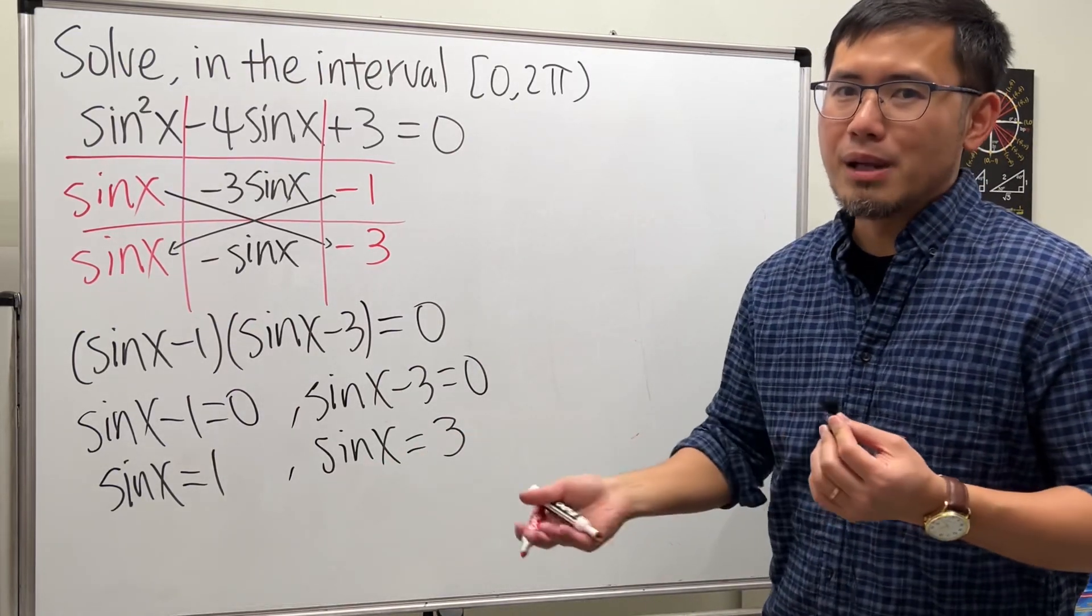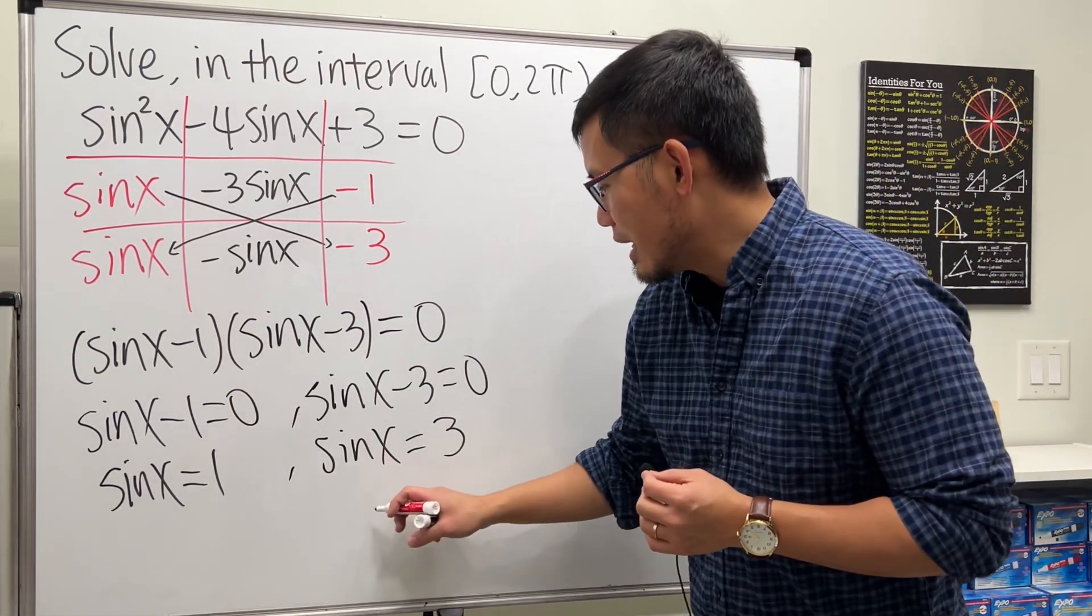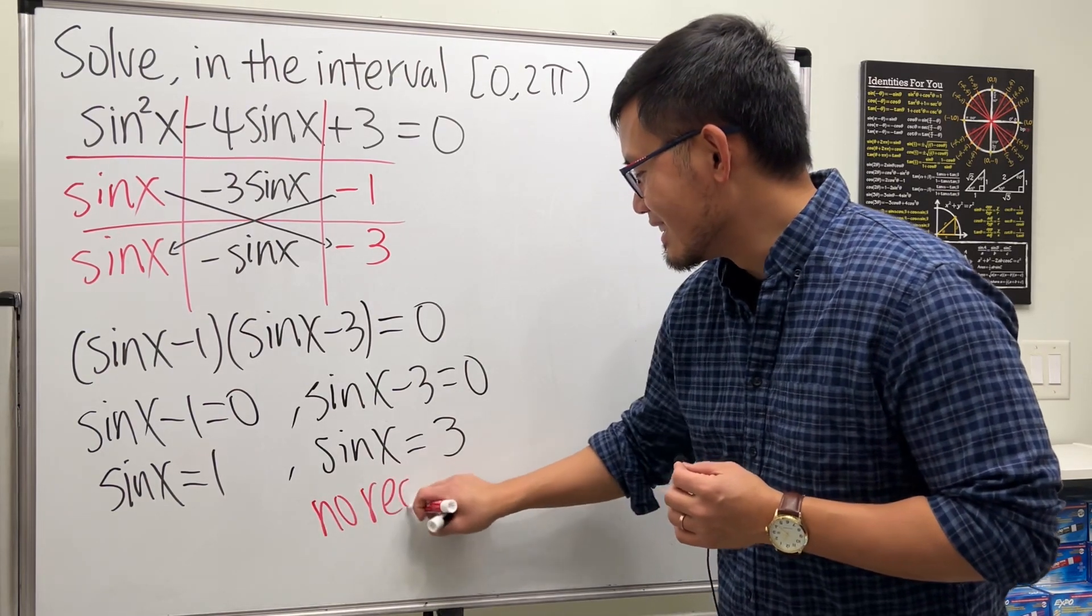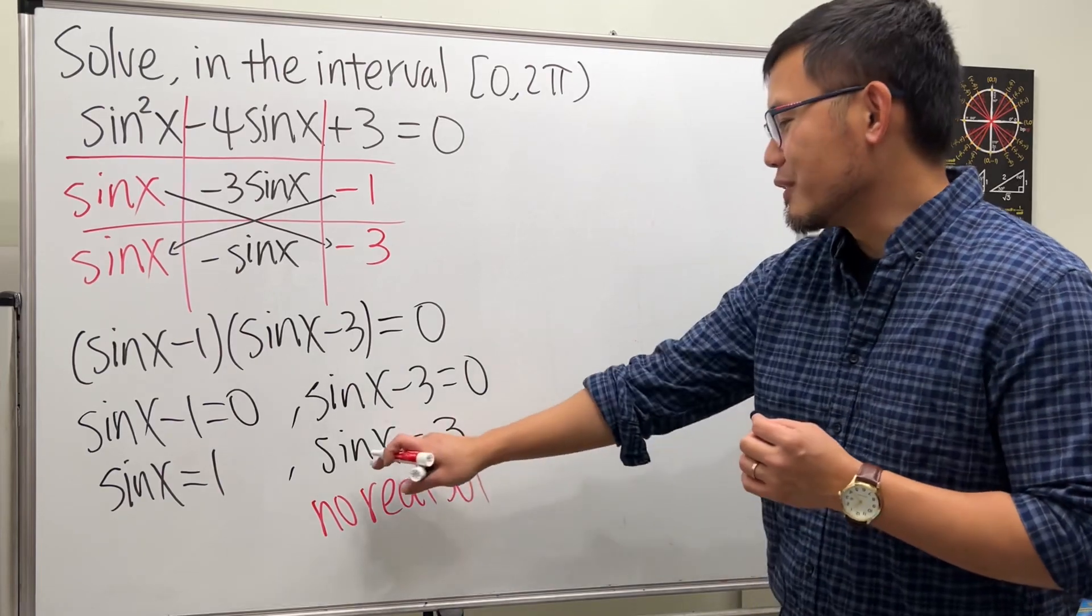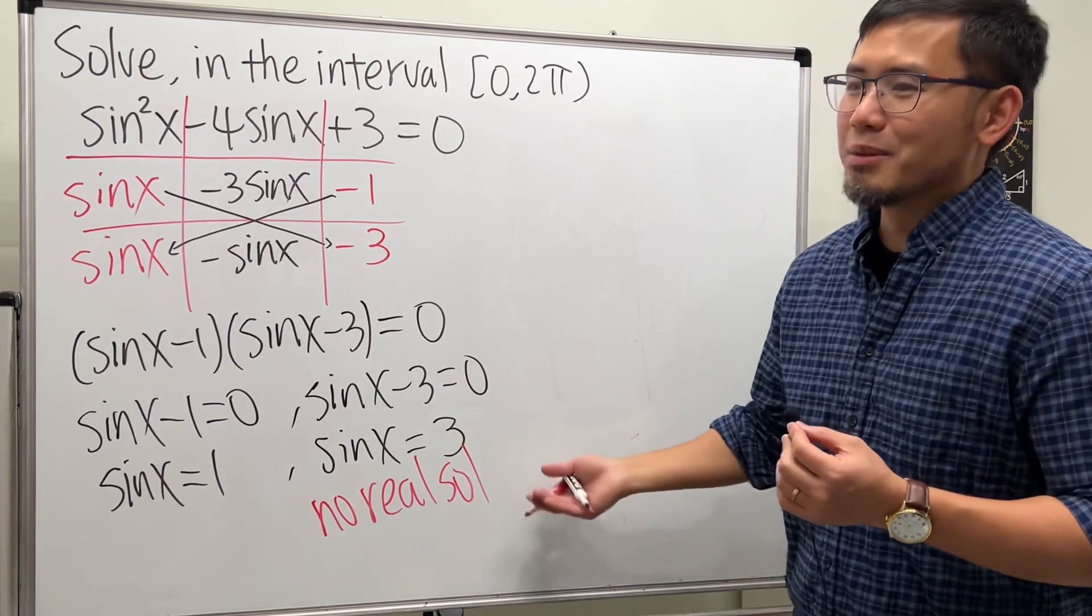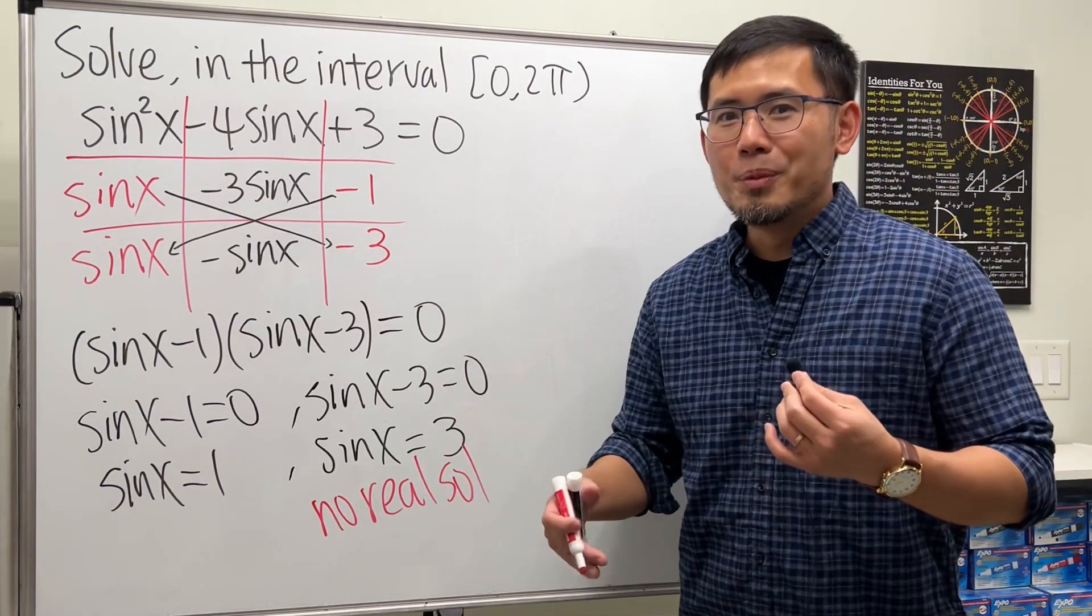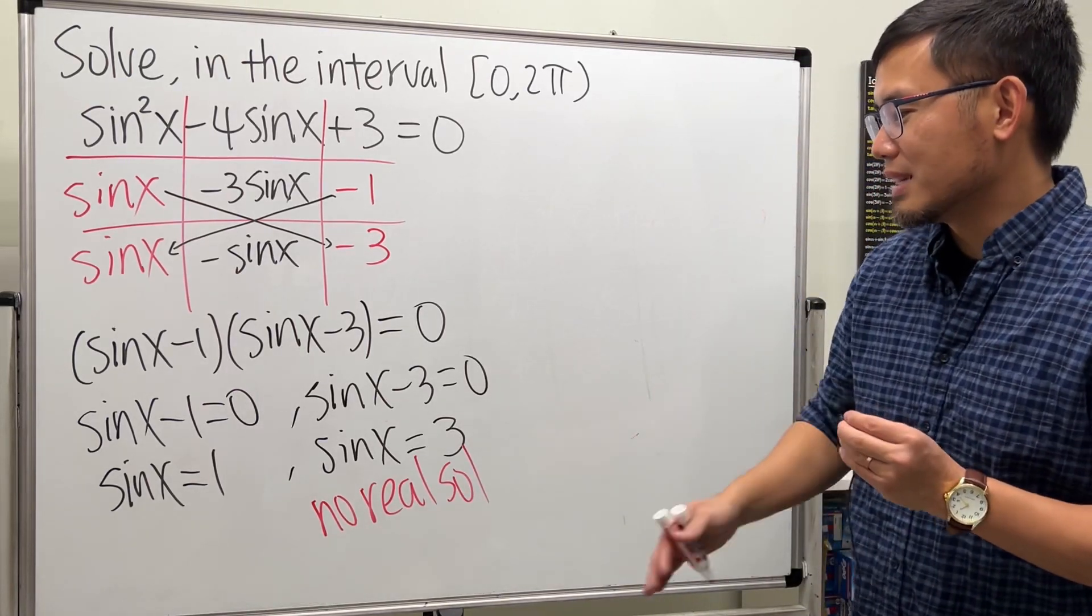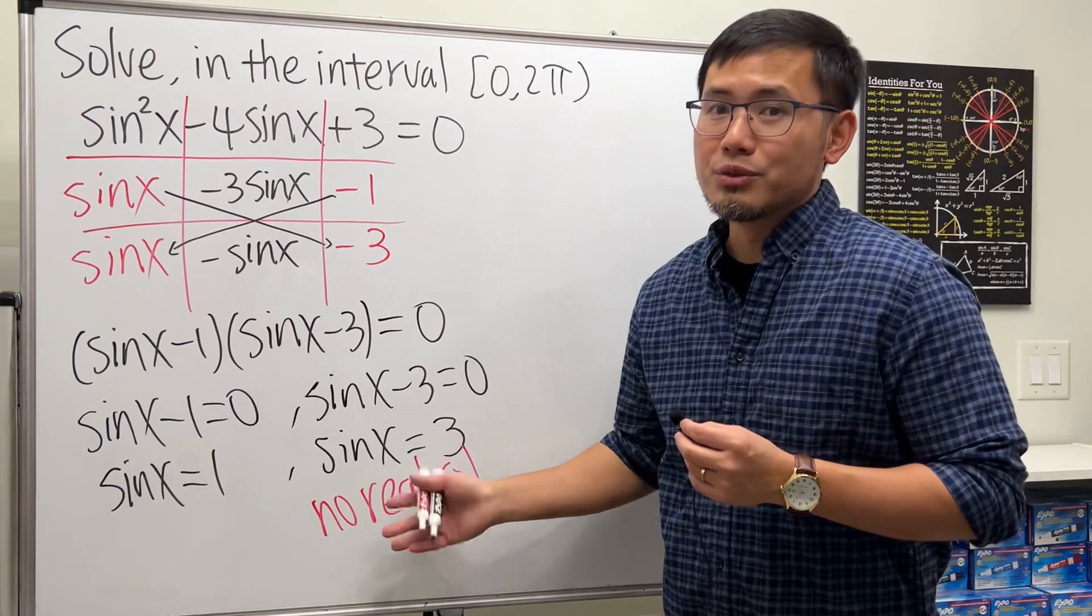So this right here is impossible. But in fact you have complex solutions for this, so I will just say no real solutions. If you want to see how to solve sine x equals 2, you can check out my other video for it. But that will be more for like complex analysis. So in your pre-calculus world trig class you just say no answer for this right here.